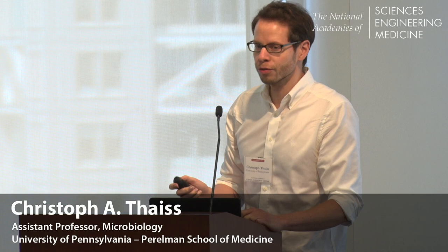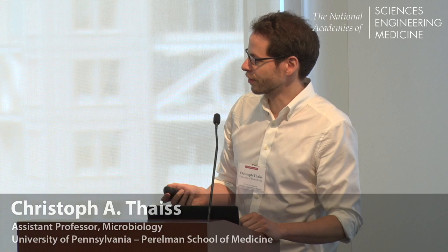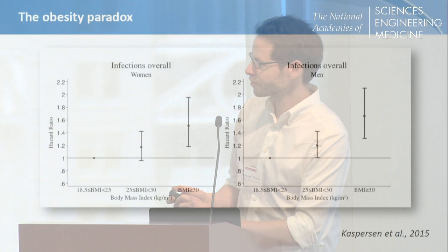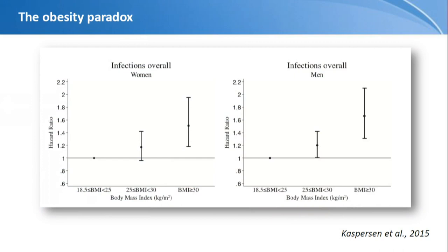What I want to do today is draw your attention to one of the studies that was our entry point to what I'm going to show you. This is a study published a couple of years ago by a group in Denmark, done on tens of thousands of people, arriving at the conclusion that high BMI is associated with a higher risk for infection. For us as basic scientists, what was really interesting is that there is hardly any scientific mechanistic data that can explain this connection.